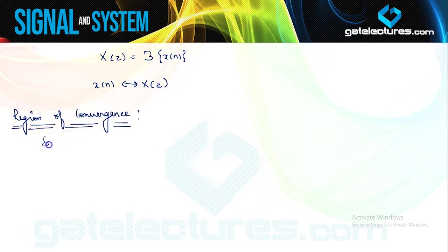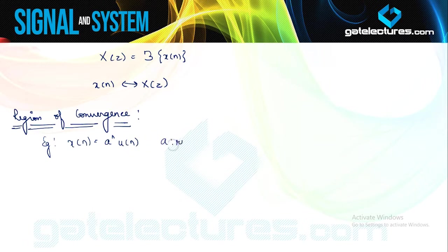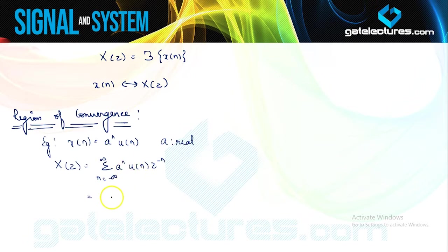To understand the concept of Z-transform and its associated ROC, consider the example signal x(n) equals a^n * u(n). This is an increasing exponential sequence, where a is some real number. If we try to find the Z-transform of this sequence, it is going to be the summation from minus infinity to infinity of a^n * u(n) * Z^(−n). Since this is multiplied by u(n), the limits change from n equals 0 to infinity, giving us (a*Z^(−1))^n.